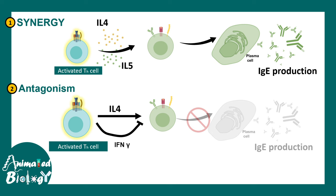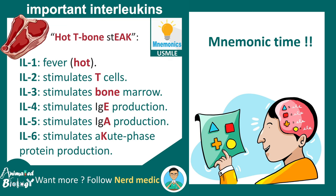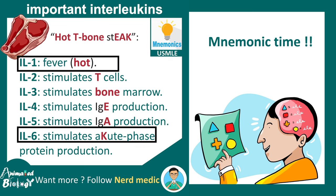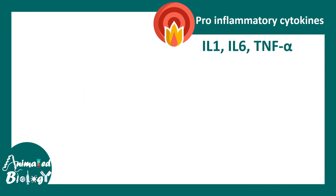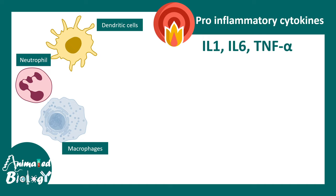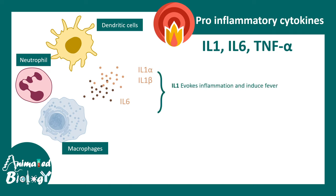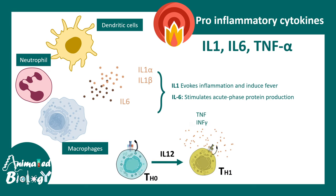Now let's look at two important pro-inflammatory cytokines: IL1 and IL6. IL1, IL6, and TNF-alpha are well-known pro-inflammatory cytokines secreted by dendritic cells, macrophages, and neutrophils. There are IL1-alpha and IL1-beta subgroups. IL1 evokes inflammation and induces fever; IL6 stimulates acute phase protein production.